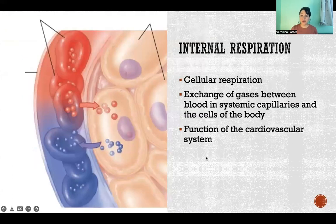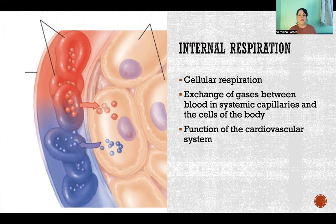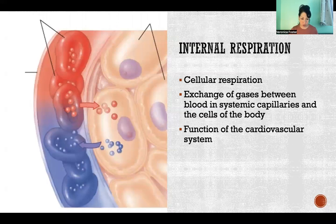Our third step is internal respiration, which is also referred to as cellular respiration. At this point, the oxygen is flowing through the blood. The blood has been oxygenated and it's being circulated by the cardiovascular system. When we have the exchange of gases between the oxygenated blood in the systemic capillaries and the cells of the body — and the cells put their carbon dioxide out into the blood to be carried away back to the lungs — that is called internal respiration. That's the third step of respiration.